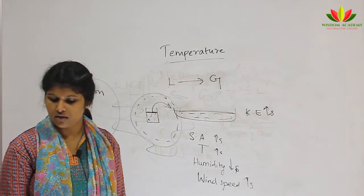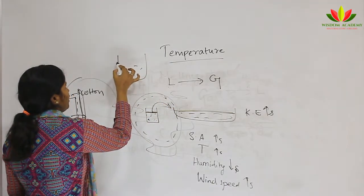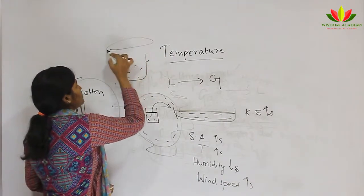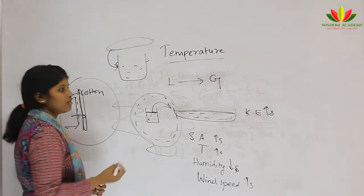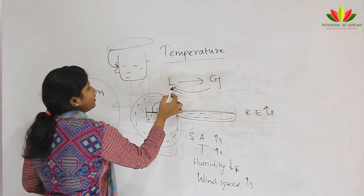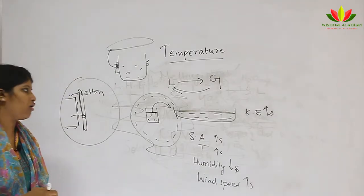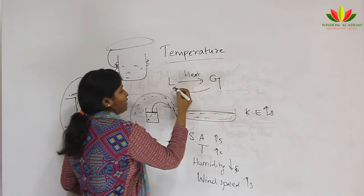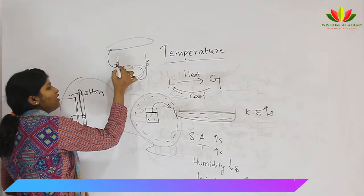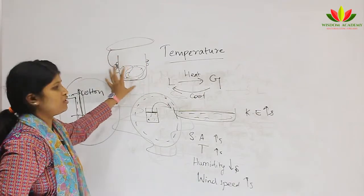Another application is the water droplets seen on the outer surface of a glass containing ice-cold water. The reason is that water vapor present in the atmosphere comes in contact with the cold glass surface, and since it is cooled, the gas is converted into liquid phase — forming droplets that stick to the outer surface of the glass. This is gas converting into liquid due to the cooling effect.